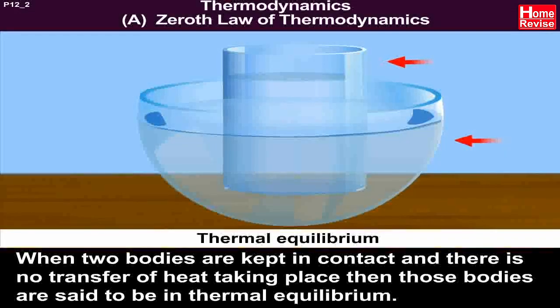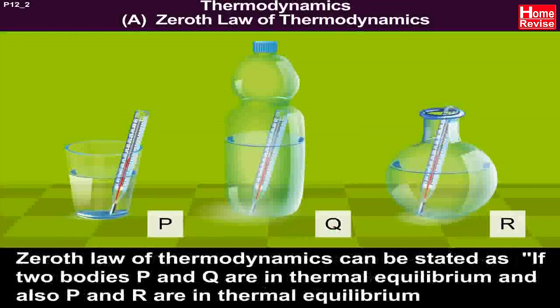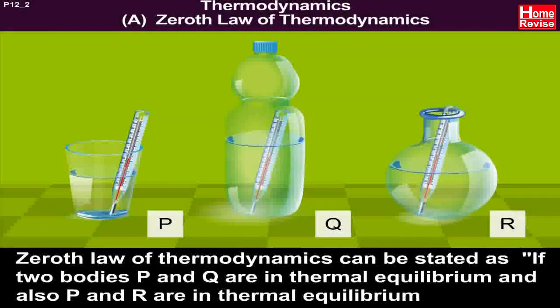are said to be in thermal equilibrium. The Zeroth Law of Thermodynamics can be stated as: if two bodies P and